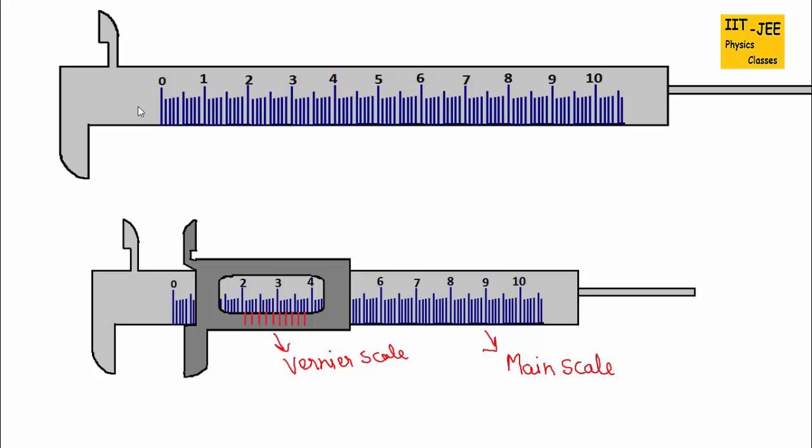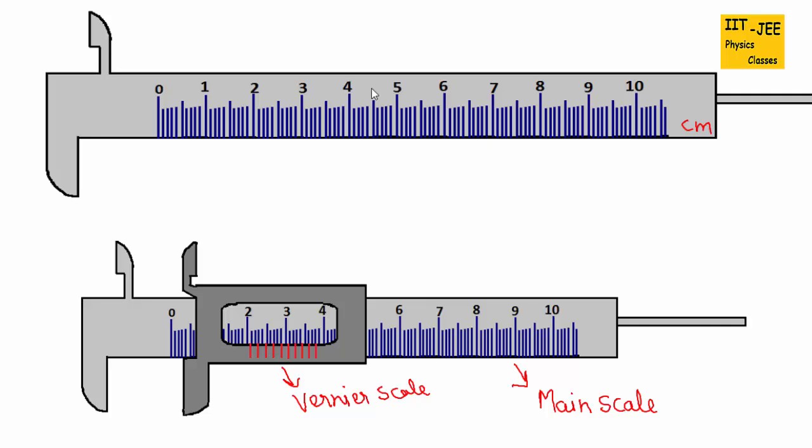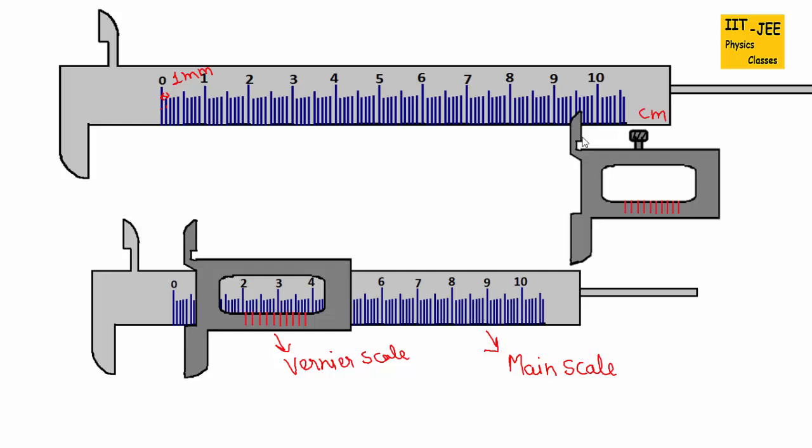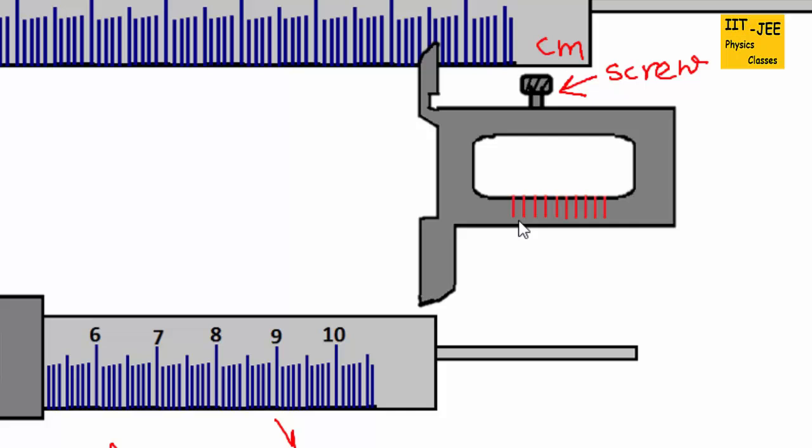Main scale is marked in centimeters. From here to here it is 1 cm, and this one is 2 cm, 3 cm, 4 cm and so on. The length of smallest division on the main scale is 1 mm. The vernier scale can slide on the main scale and is joined with a screw. Vernier scale has number of divisions. Most vernier scales like this one have 10 divisions on it, but some other vernier scales also have 20 divisions.